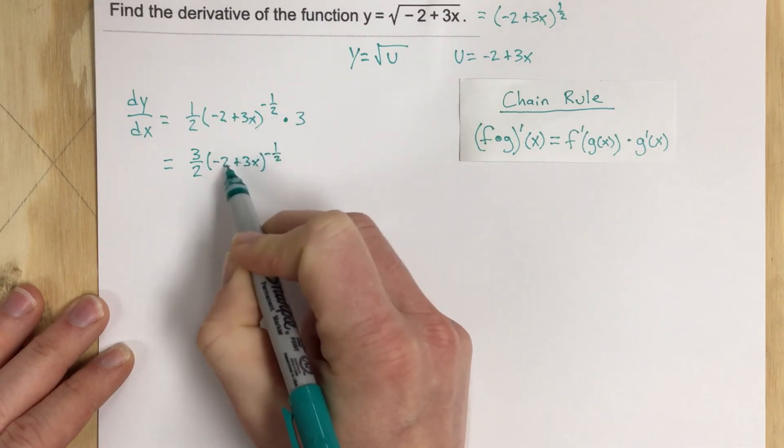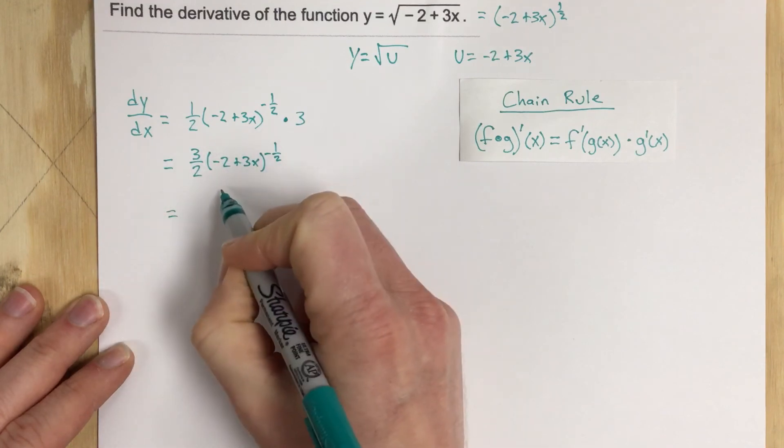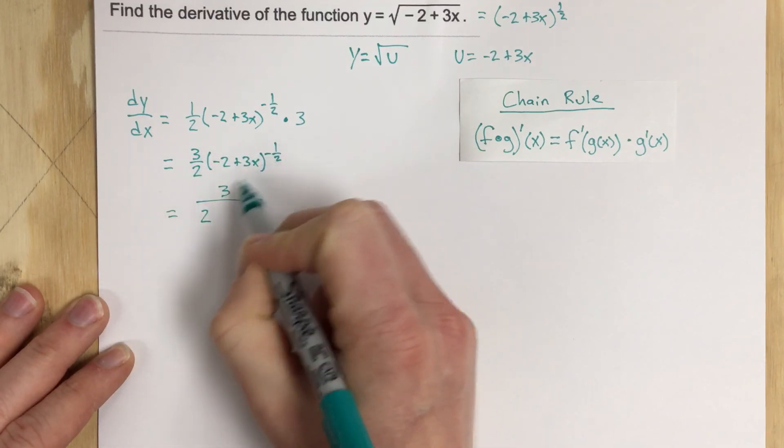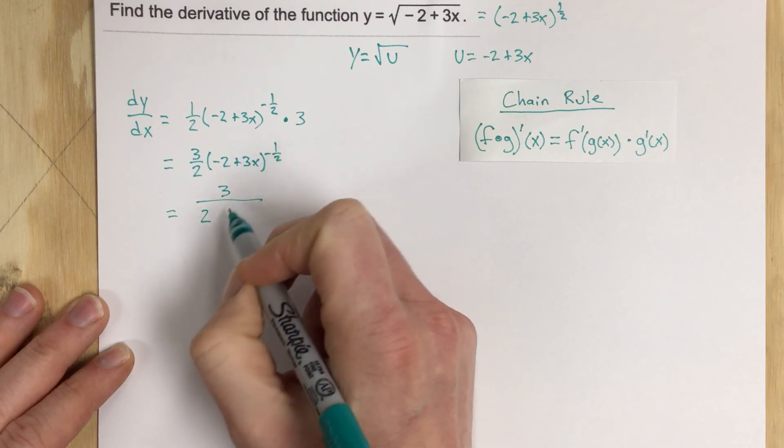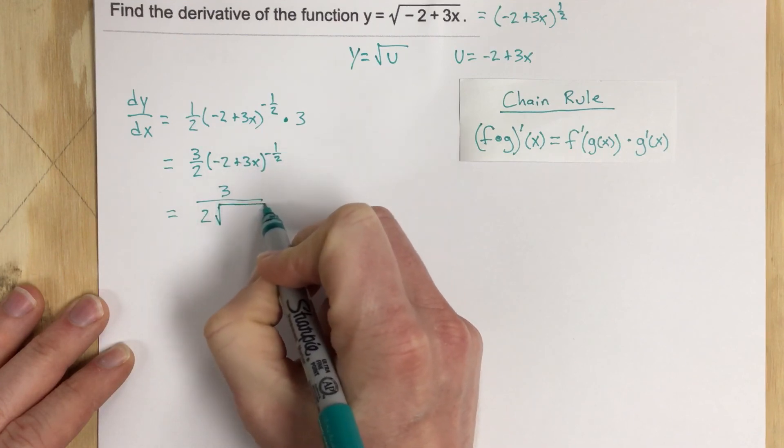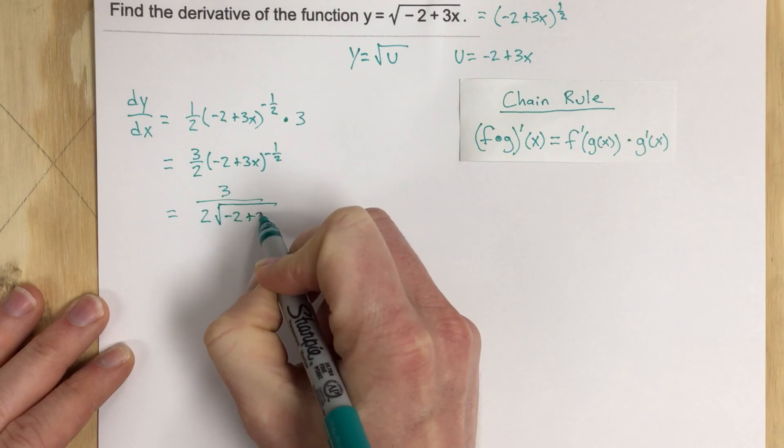I need to put this in the denominator so I'm going to say that this is actually 3 over 2, and because it's a negative 1 half power I can write that as root negative 2 plus 3x.